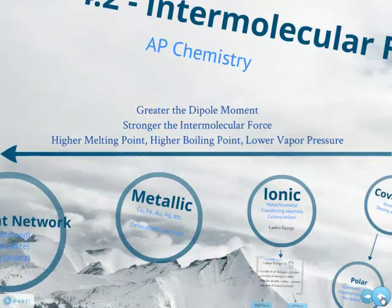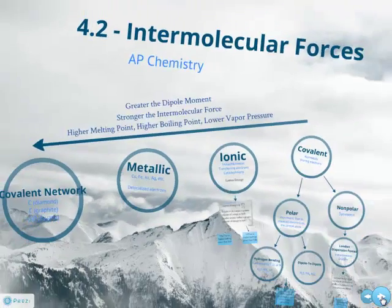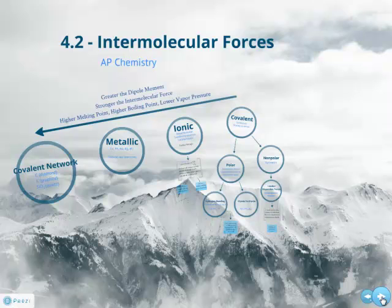That is intermolecular forces in a nutshell. Going from London dispersion forces to dipole-dipole, to hydrogen bonding, to ionic, to metallic, to covalent network — these have greater dipole moments as we go to the left, which means stronger intermolecular force, higher melting points, higher boiling points, and lower vapor pressures. We become solids as we go to the left, whereas London dispersion forces are usually gases. Guys, I hope this helped. Keep referring to this chart and really get to know it well. Take care — I'll see you in class. Bye.